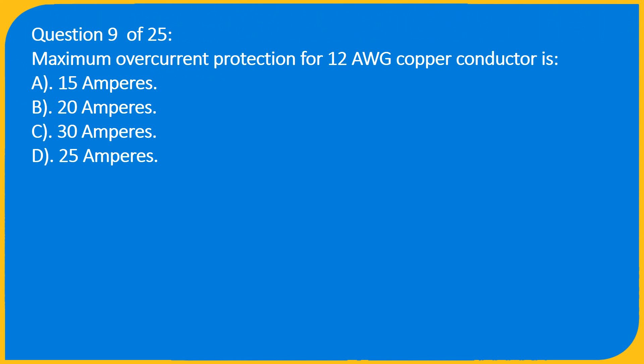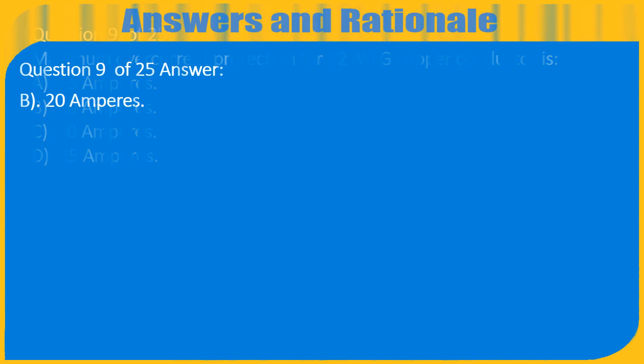Question 9 of 25: Maximum overcurrent protection for a 12 AWG copper conductor is? A. 15A, B. 20A, C. 30A, D. 25A. Answer: B. 20A.